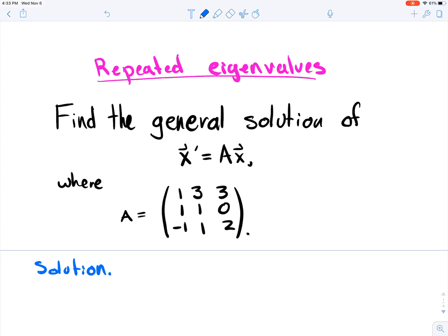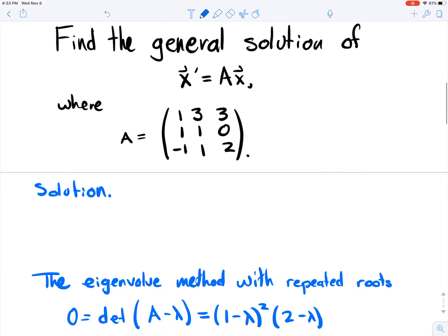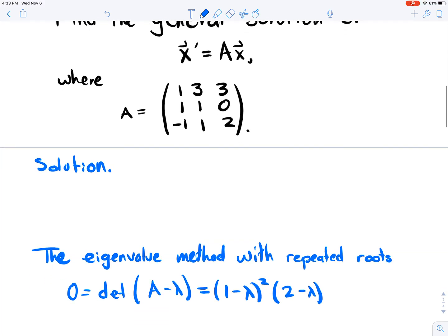So in this system of ODEs, we have our matrix A. Just like in all the previous examples, what you want to do first is find the eigenvalues. So you set up this equation here. We've already done it for you, and so the eigenvalues are 2 and 1.